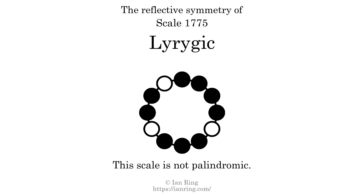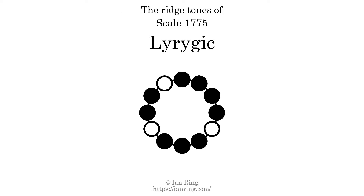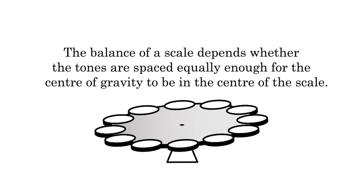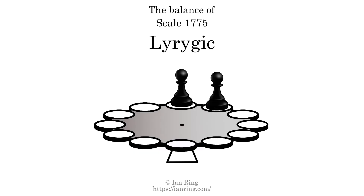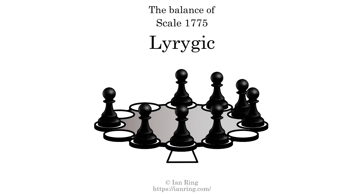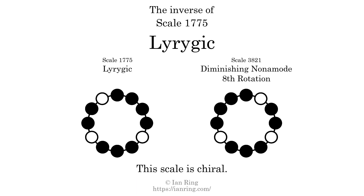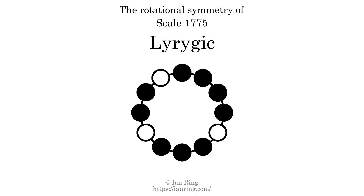This scale has no reflective symmetry. This scale has a different pattern of intervals ascending and descending, so it is not palindromic. This scale has no ridge tones. This scale is not balanced. The inverse of this scale is scale 3821, also known as Diminishing Nonmode 8th Rotation. This scale is chiral — it cannot transform into its inverse by rotational transformation. This scale has no rotational symmetry.